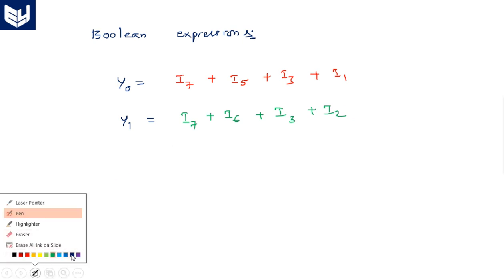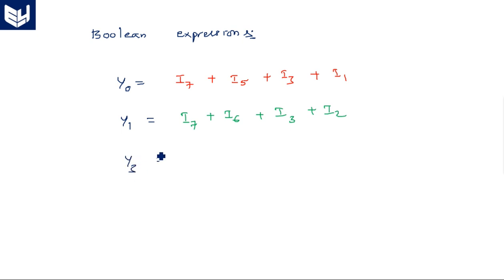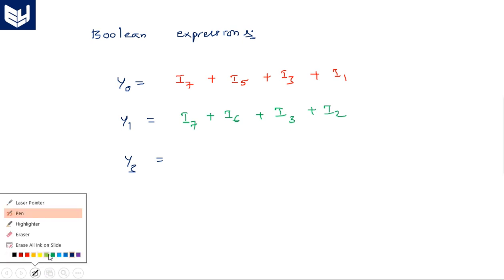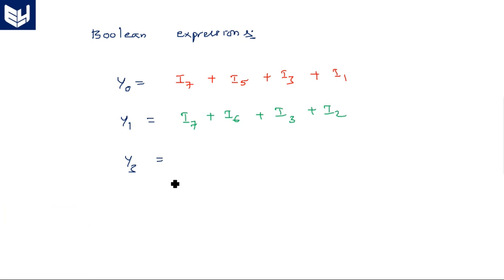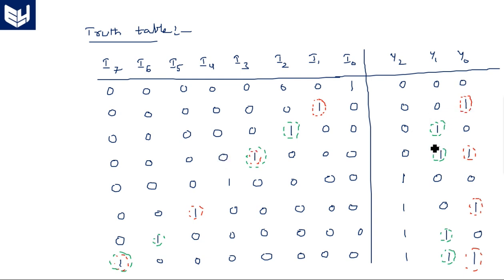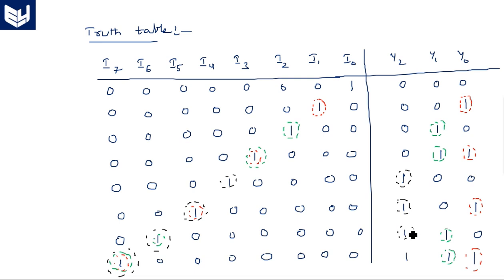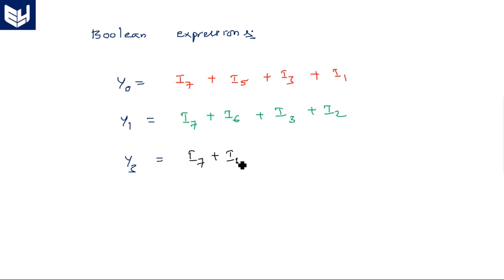Now coming to Y2: Y2 is 1 when I4, I5, I6, or I7 are activated — because all the next four are there. So Y2 is the OR operation between I7, I6, I5, and I4. Y2 equals I7 plus I6 plus I5 plus I4.